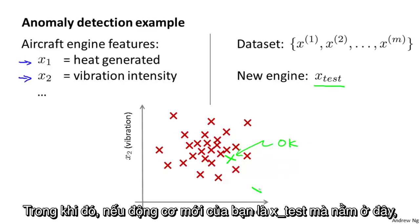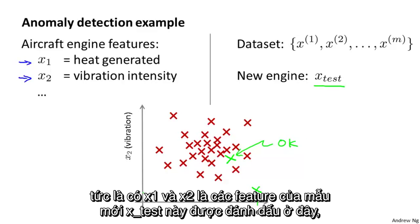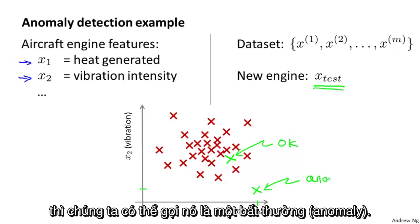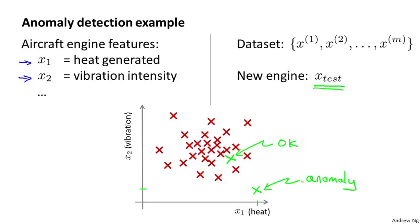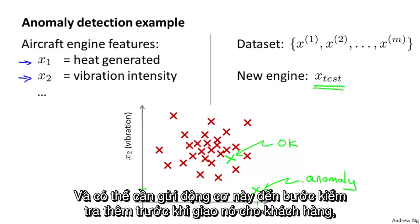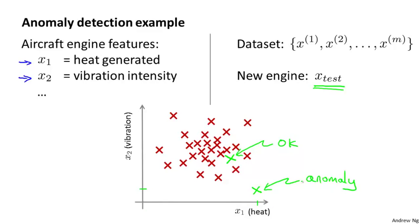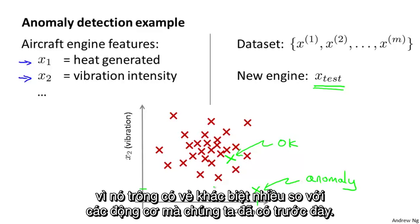Whereas if your new aircraft engine, if X test, were a point that were out here, so if X1 and X2, if the features of this new example, X test, were all the way out there, then we would call that an anomaly, and maybe send that aircraft engine for further testing before we ship it to a customer, since it looks very different than the rest of the aircraft engines we've seen before.